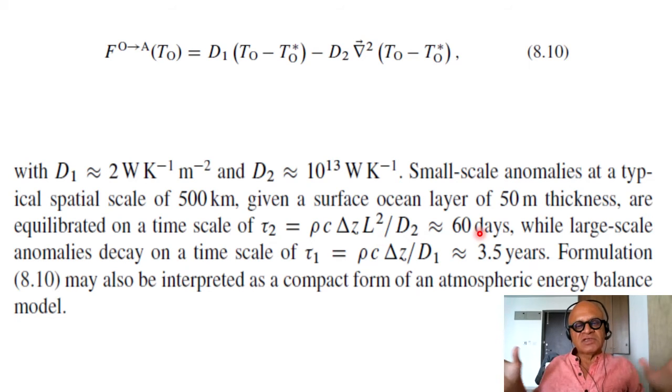So if you have a 500 kilometer basin, interior ocean, some estuary or something like this, you know the depth, then it is equilibrating at around 60 days. If a cold wave comes or a heat wave comes into the ocean, how long does it take for it to get back to its background state? While large scale anomalies decay on a time scale of tau1 equal to rho C delta Z over D1 of 3.5 years. Here you can think of El Nino where you have moved large amounts of warm waters from the West Pacific towards the Eastern Pacific. Even though the sloshing back happens within 9 to 12 months, the entire system should take about 3.5 years, which is approximately the timescale between one El Nino and the other. I'm just using it as a metaphor.